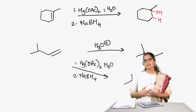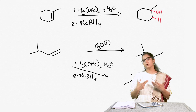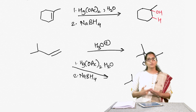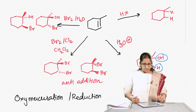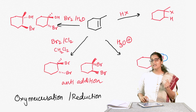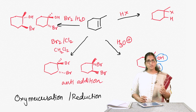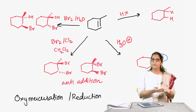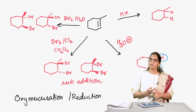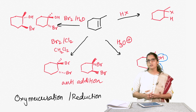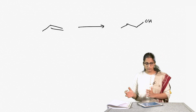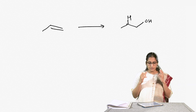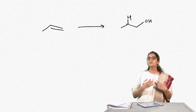Nowadays oxymercuration-reduction is not used as often because mercury is poisonous and toxic, so people avoid using it in the lab — but it was a famous reaction in the earlier century. All of the reactions so far put hydrogen on the less substituted carbon. But what if I want to put the hydrogen on the more substituted carbon and the OH on the less substituted carbon? Then I cannot use the earlier methods.